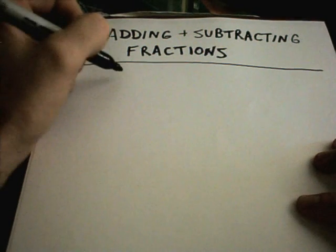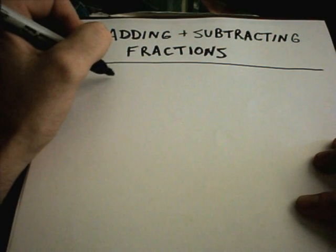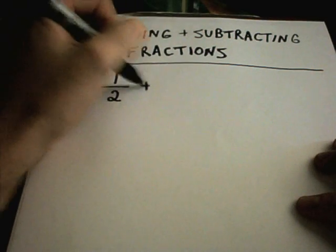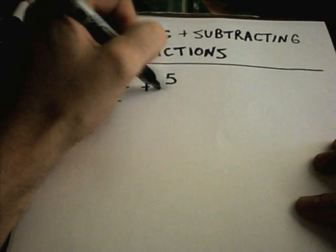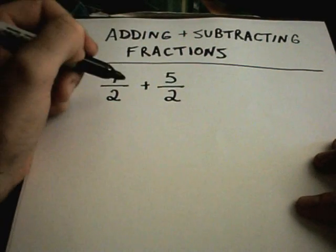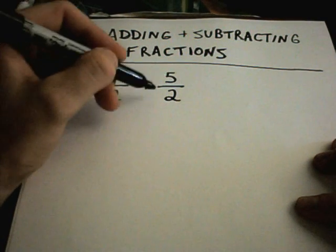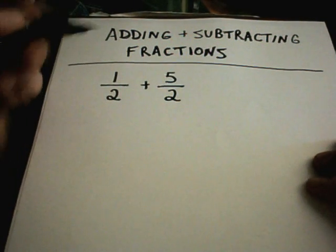Recall when you go to add or subtract a fraction, you have to have common denominators. That means the stuff on the bottom has to be exactly the same. Notice here I have 1 half plus 5 halves. I have the exact same denominator.